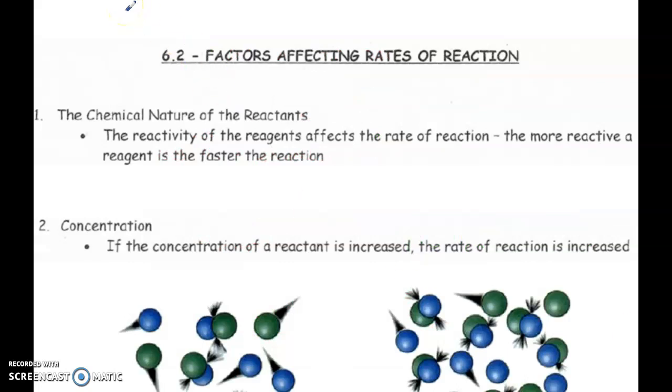So that's essentially 6.1. So looking at rate, different ways that rate can be calculated, and looking at balanced chemical equations or graphs to determine the rate of a reaction.